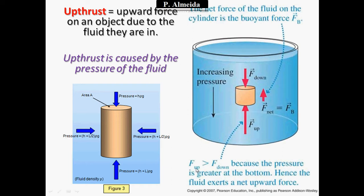Because the force pushing the object up is bigger than the force pushing it down, this creates an overall net force called FB — the buoyant force. So I can talk in terms of uptrust or buoyant force. Because the force trying to make the object go up is bigger, the object has a tendency to go up and to float. This is because the pressure is greater at the bottom, so the fluid exerts a net upward force.